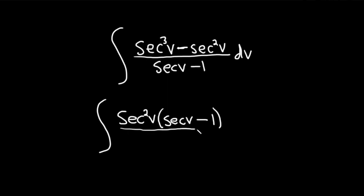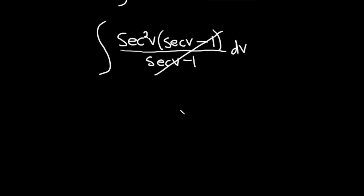All of this is being divided by secant v minus 1. And then here we have a dv. These cancel. So we're simply left with the integral of secant squared v, then we have our dv.